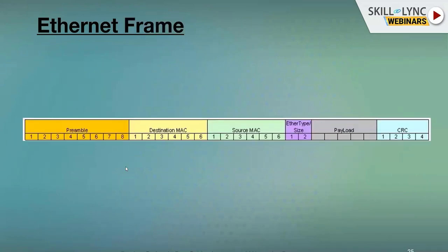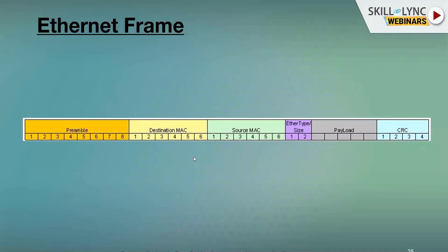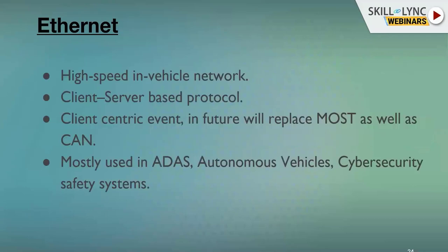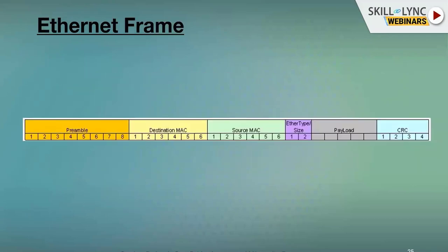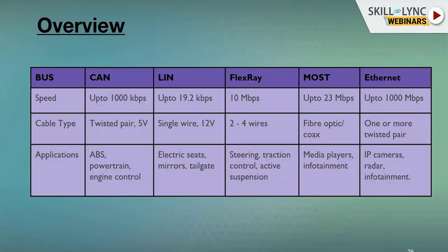The Ethernet frame contains a preamble block, destination MAC address, source MAC address, Ethernet type, payload (the data), and CRC calculated based on the data. Ethernet Type 1 and Type 2 are used for different frame types. The preamble is sent before the address to prepare the receiver.